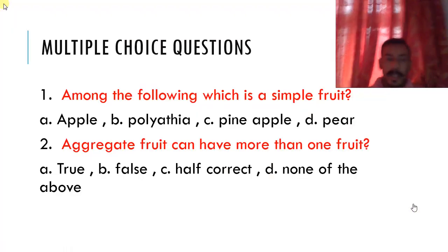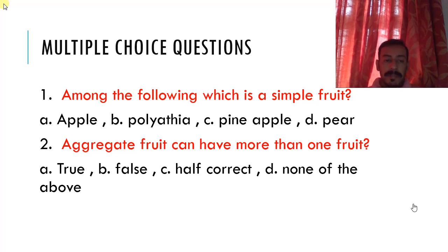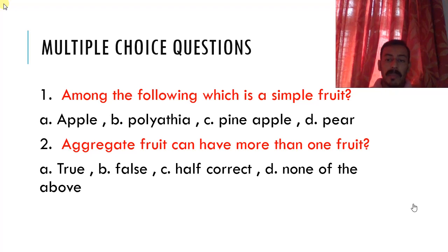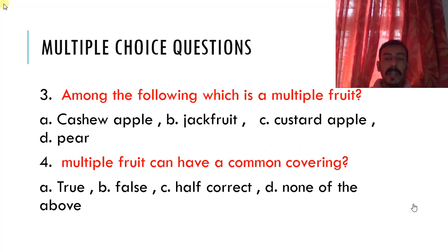So based on this, let me ask you questions. Among the following which is a simple fruit? Just remember the answer. Aggregate fruit can have more than one fruit. Based on it, what is the right option? Is it true? Is it false? Is it half correct? None of the above.